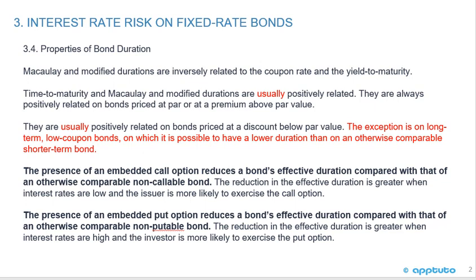Macaulay and modified durations are inversely related to the coupon rate and the yield to maturity. Time to maturity and Macaulay and modified durations are usually positively related — they are always positively related on bonds priced at par or at a premium above par value, and usually positively related on bonds priced at a discount below par value.